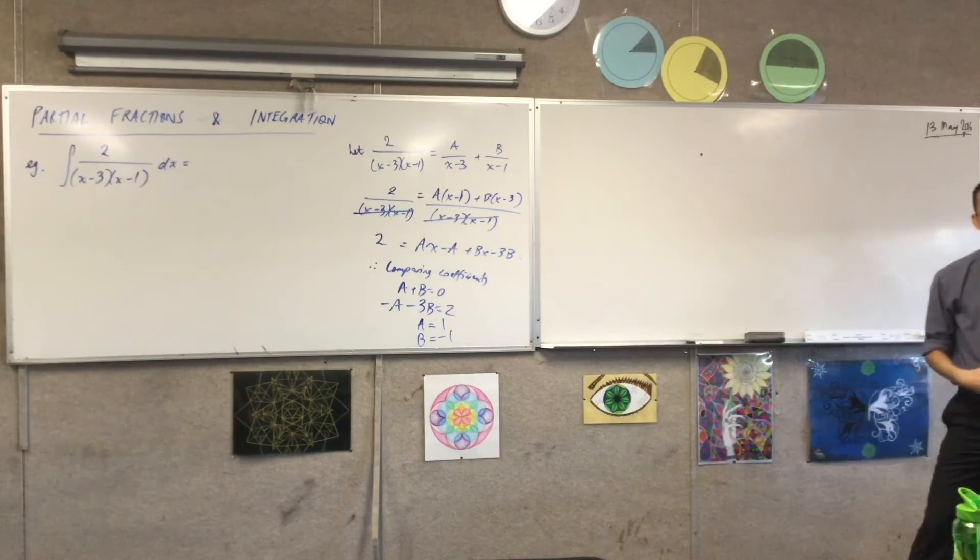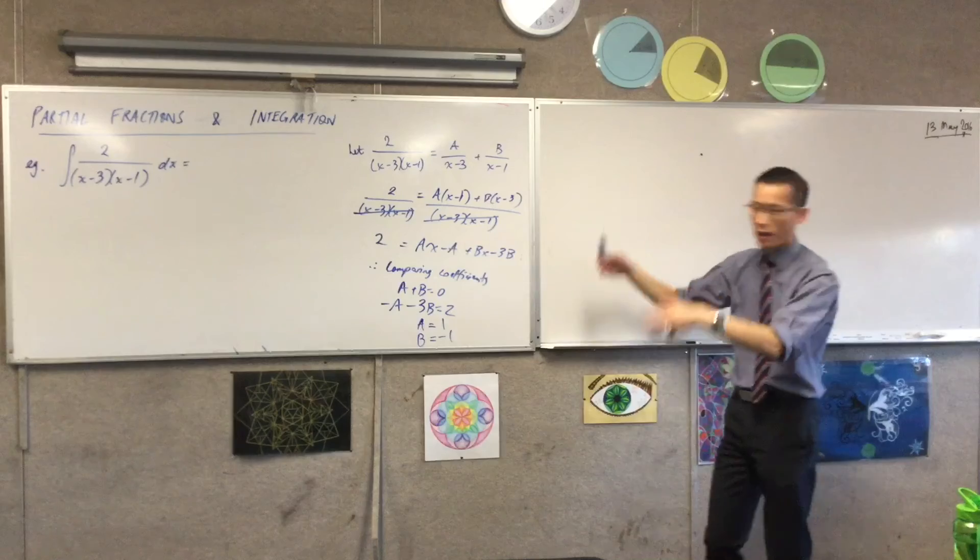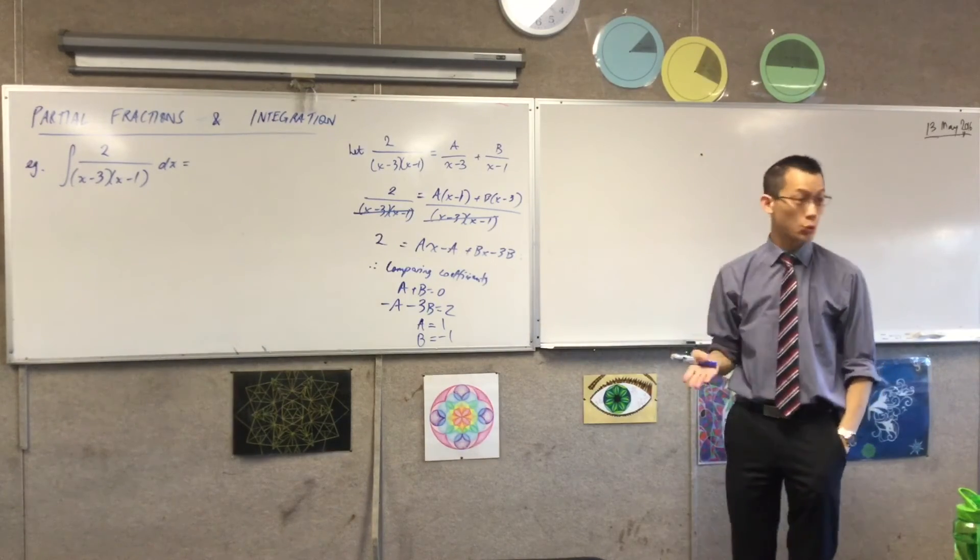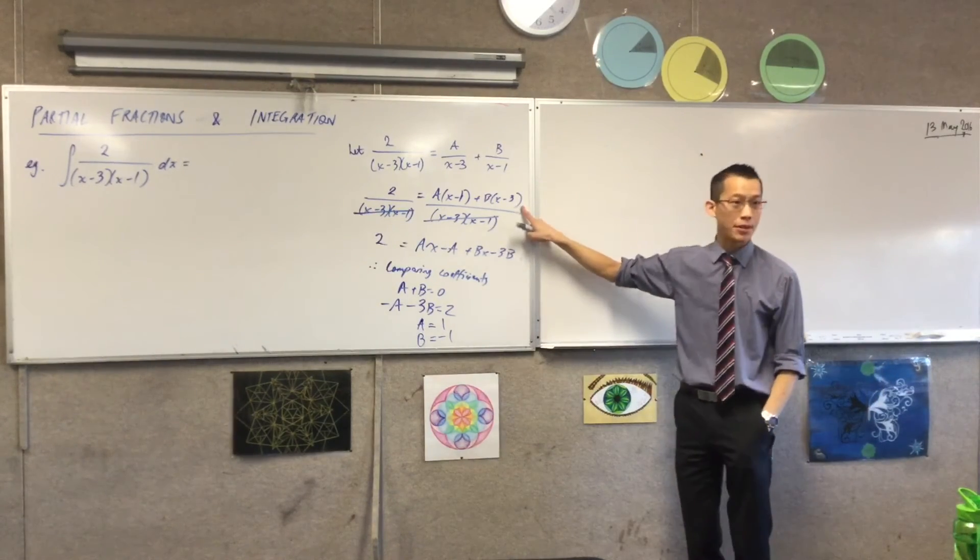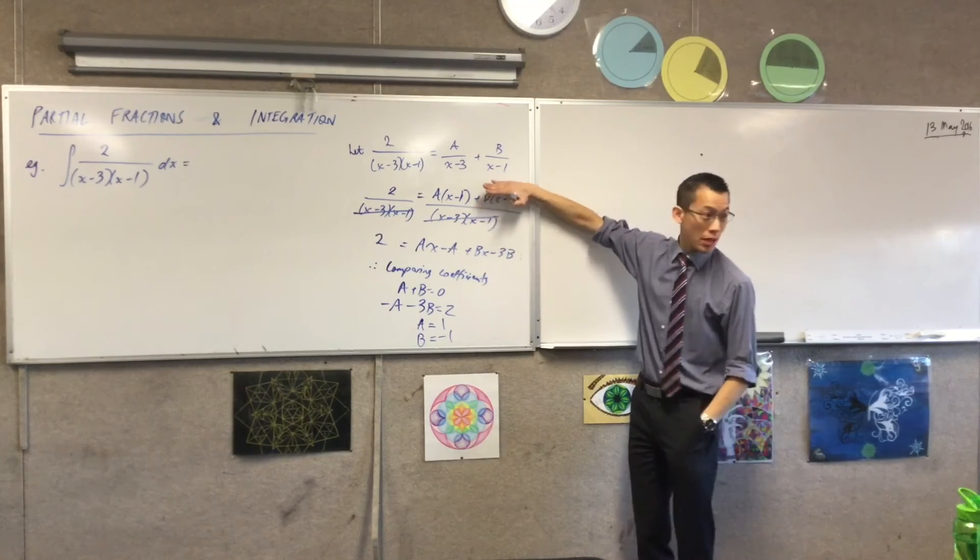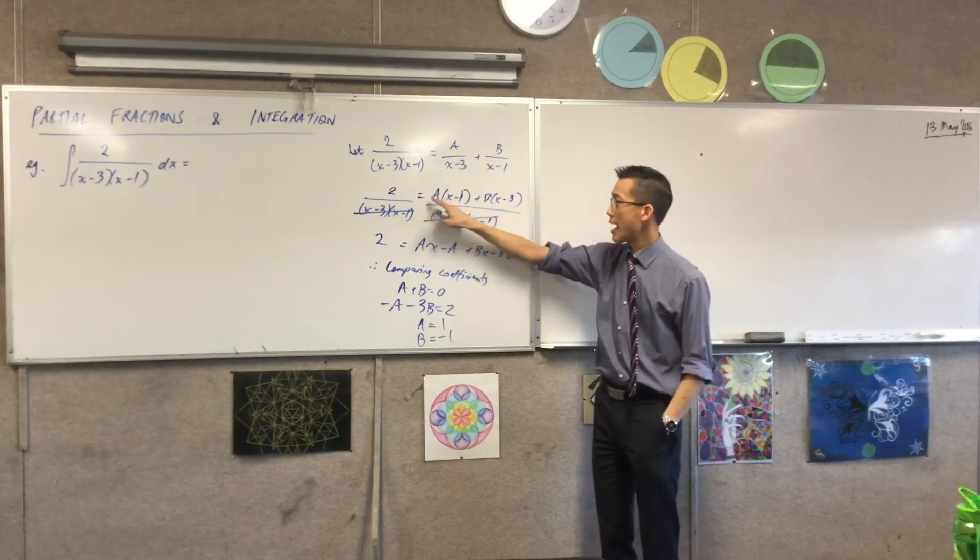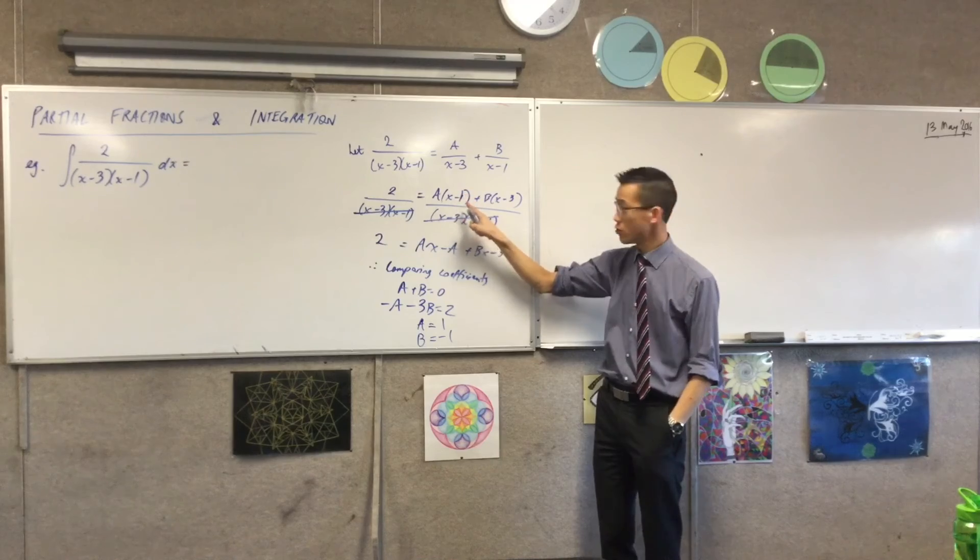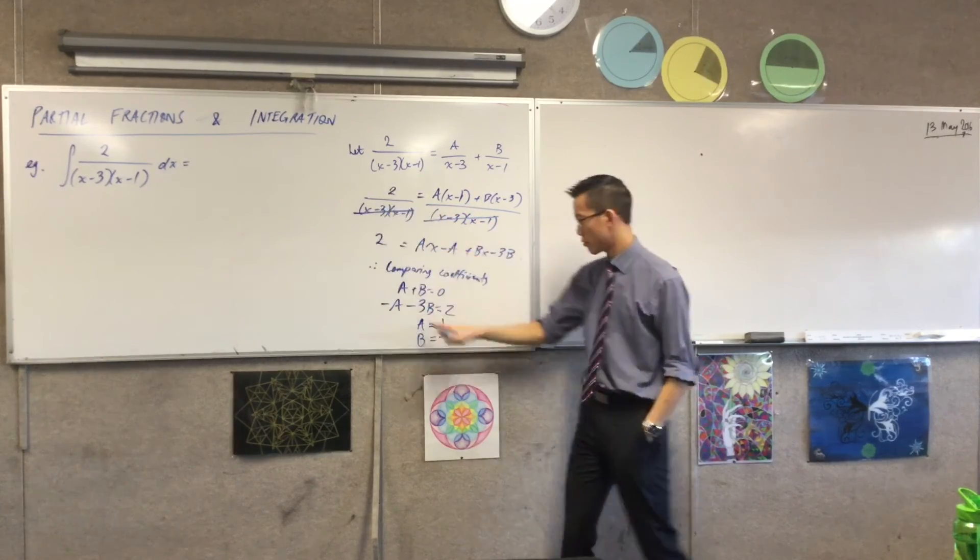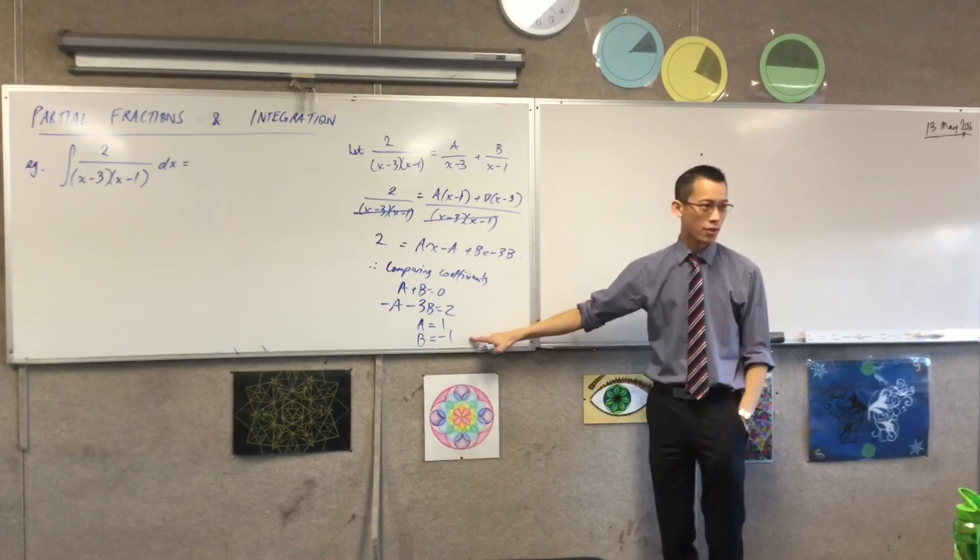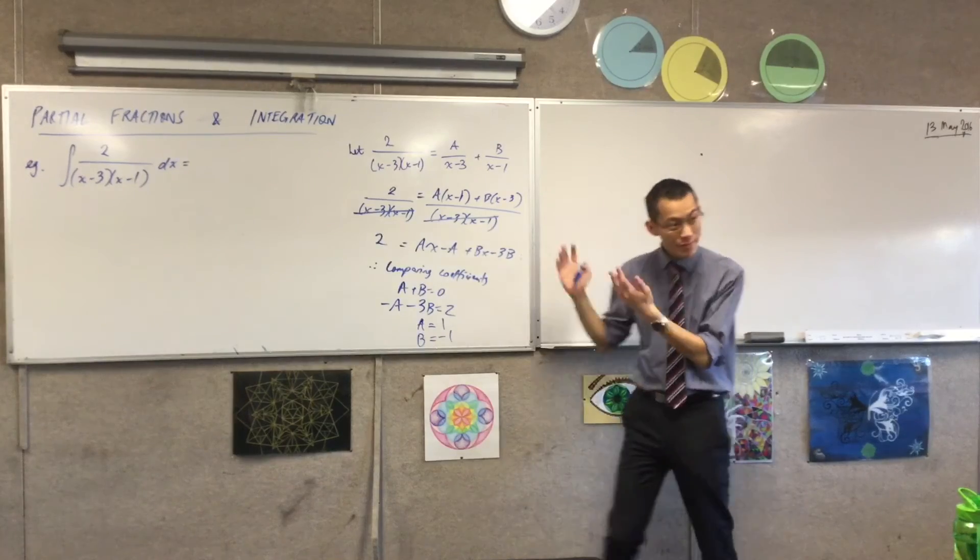A is plus 1, B is minus 1. Can we just confirm that that would be the case by going back and trying that other method? If I said x equals 3 at this point, what would happen? This guy would disappear. So I'm going to have 2a, which is 2. Perfect. I'm not going to bother to confirm that. You see how it works.